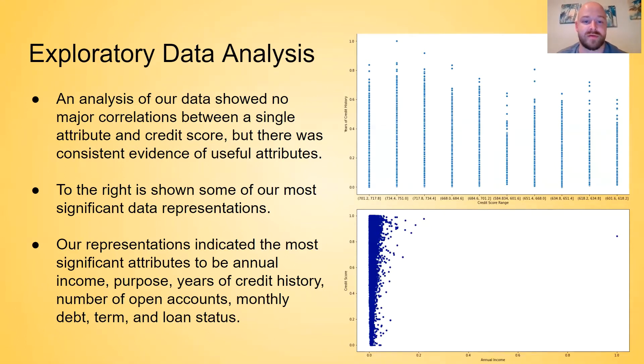We found the most significant attributes to be annual income, purpose, years of credit history, number of open accounts, monthly debt, term, and loan status. Attributes such as annual income, years of credit history, and monthly debt—intuitively, these were expected to be correlated with credit score. Thank you.